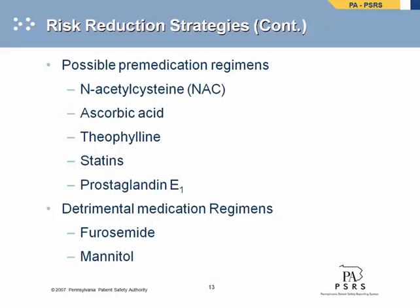Many drug interventions studied to prevent CIN are based on attempts to improve renal blood flow or to block mediators implicated in CIN development. For the most part, these drugs have either had no effect or were actually detrimental to renal function, such as furosemide or mannitol. No single pharmacologic agent has had consistently positive results in preventing CIN. However, studies and meta-analyses have yielded positive findings for some drugs, and combining different antioxidant compounds, such as sodium bicarbonate infusion and oral NAC, may provide an additive effect in preventing CIN.